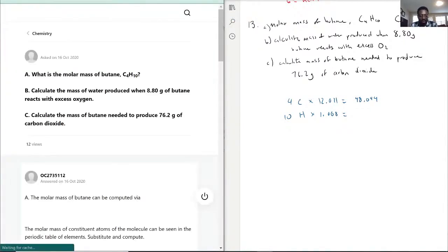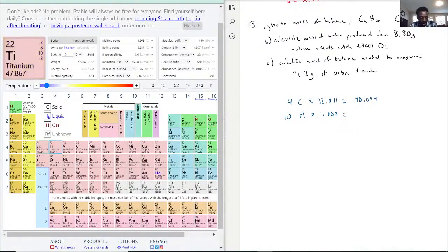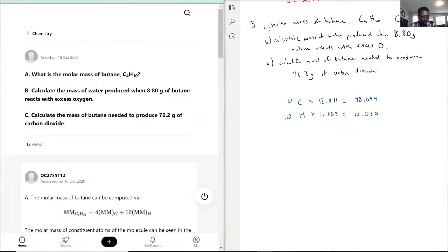So we have carbon 12.011 and the 1.008 times 10 will be 10.080. So we have as a total 58.124 grams per mole.